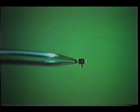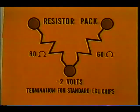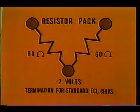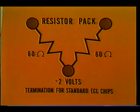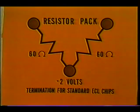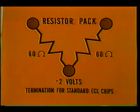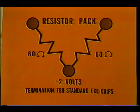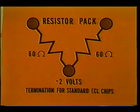Looking at the actual resistor package, we see the package has three external connections. Inside the package, there are two resistors. One end of both of the resistors is tied together to form one output. The other ends of the resistors are fed directly to the output. The common end will be externally tied to minus 2 volts, and the other resistor ends to the output of the logic elements.